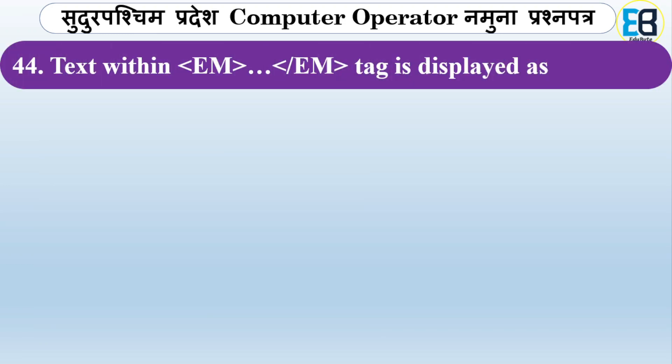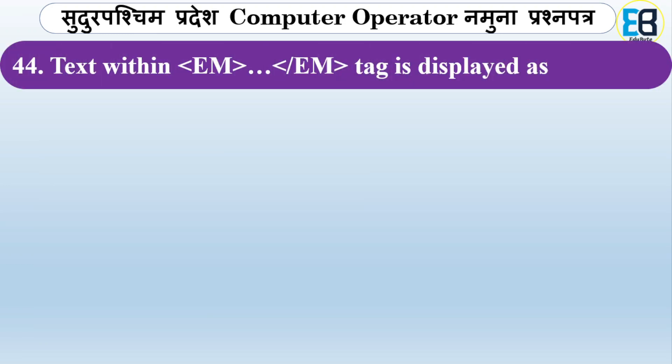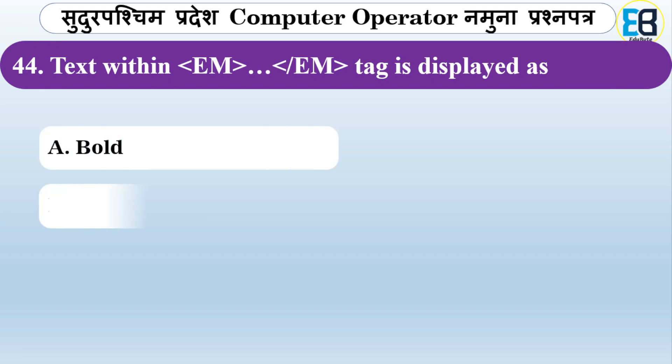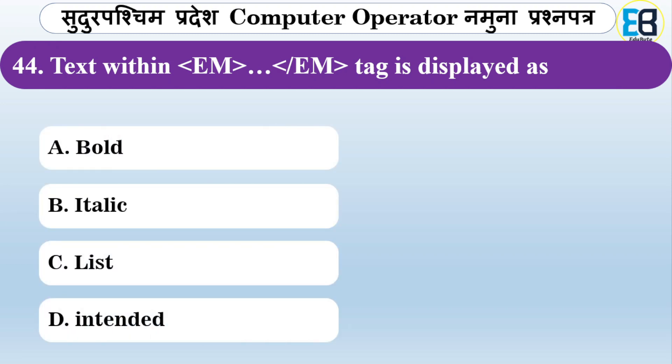What does the EM tag display text as? Options are ordered, bold, italic, or indented. The correct answer is italic — the EM tag displays text in italic format.